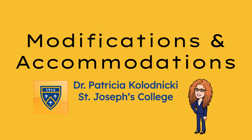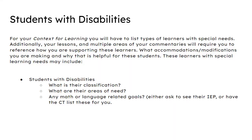For edTPA, you're going to need to know specifically what kinds of modifications and accommodations to be used for your context for learning. Starting with students with disabilities, for your context for learning, you will have a list of types of learners with special needs. Additionally, your lessons and multiple areas of your commentaries will require you to reference how you're supporting these learners, what accommodations and modifications you are making, and why these are helpful for your students.